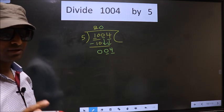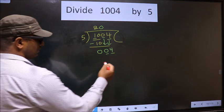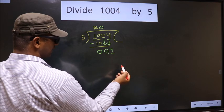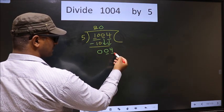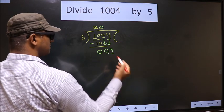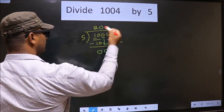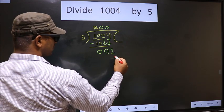Instead, what you should think of is: what number should we write here? If we write 5 here, that is larger than 4. So what we do is we take 0 here. So 5 times 0, 0.